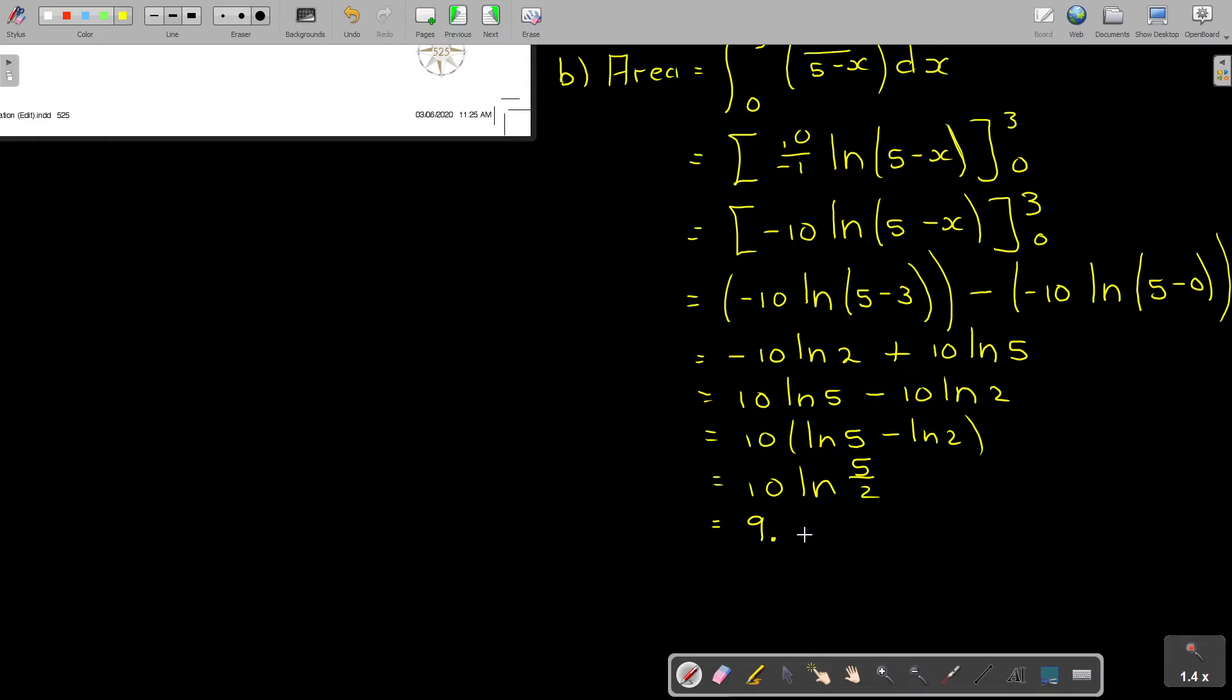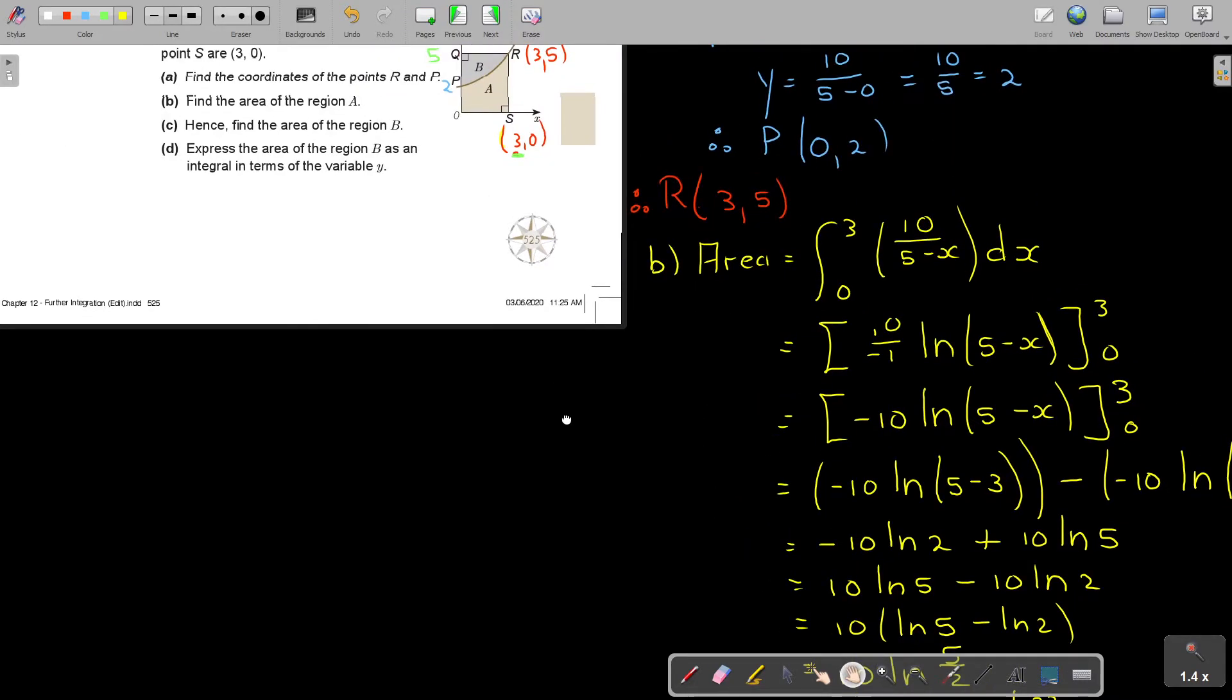But if I'm 3 significant, it's 9.16. If they say exact, usually, you leave it like that. Otherwise, you can make it to 3 significant. Okay. And I don't know the units, but it's units squared. Okay. That's number B. And now, number C.